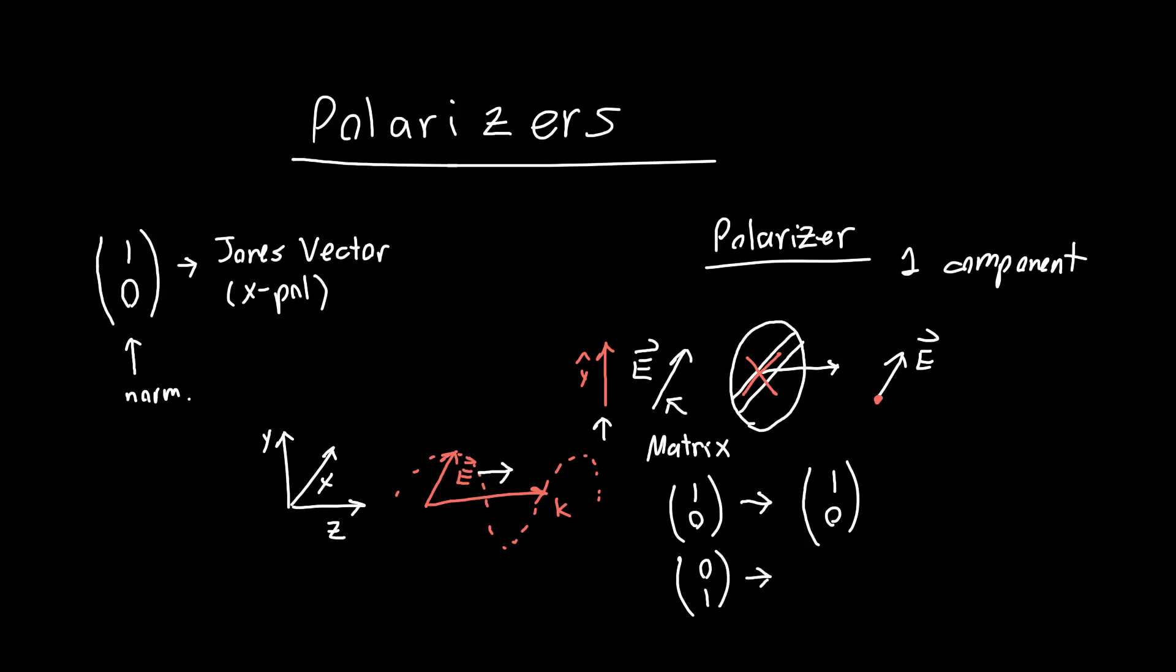But for y polarized light, we said it's going to absorb all of it or reflect all of it, so there's going to be nothing left at the output. Whereas we initially had (0,1) or y polarized light, at the output we have (0,0), so nothing is left.